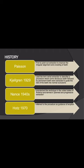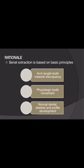Regarding history, Payson was the first to point out extraction as a therapeutic procedure to improve the irregular alignment and crowding of teeth. Jelgren in 1929 first used the term 'serial extraction' to describe a procedure where some deciduous teeth followed by permanent teeth were extracted to guide the rest of the teeth into normal occlusion. Nance in the 1940s popularized this technique in the USA and termed it 'planned and progressive extraction,' and HOTS referred to the procedure as 'guidance of eruption.'